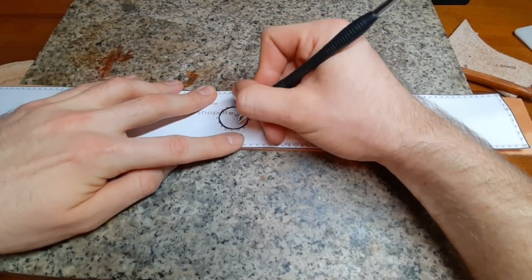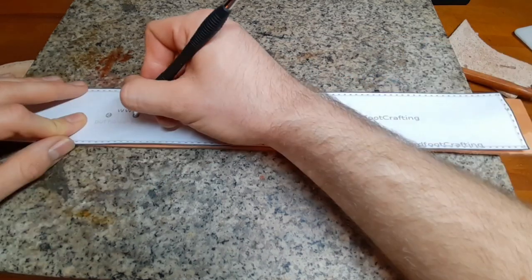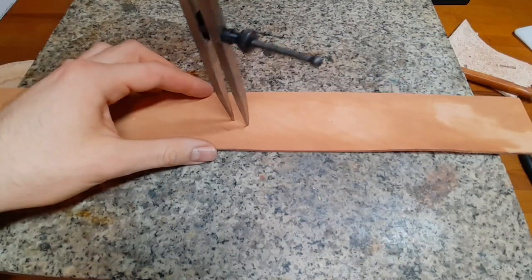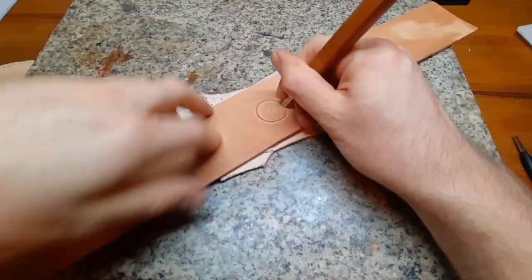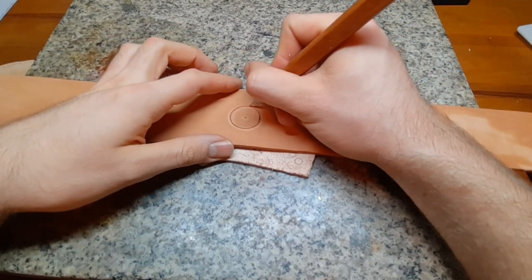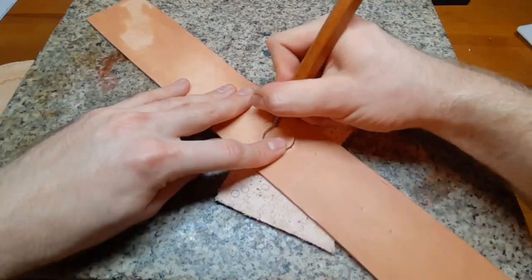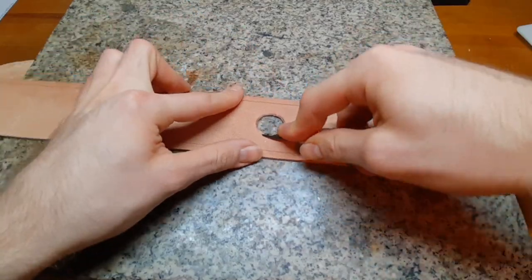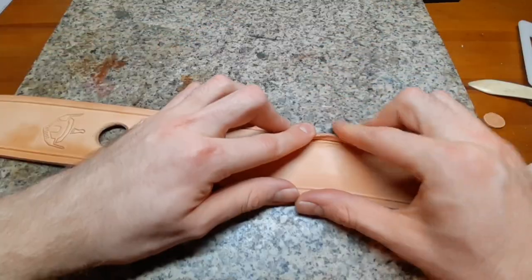Mark the drinking opening on the side piece as well as the punching holes and use a wing divider to cut already a little bit in the leather and then use a small knife to cut everything out completely. With a beveler you can smooth the edge as well as with a burnisher.